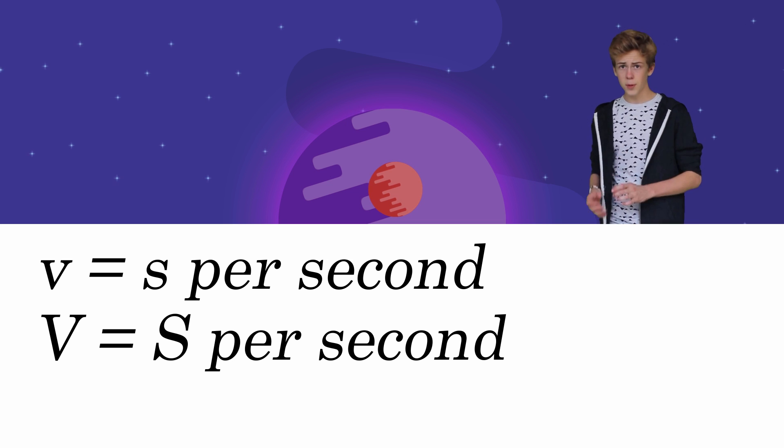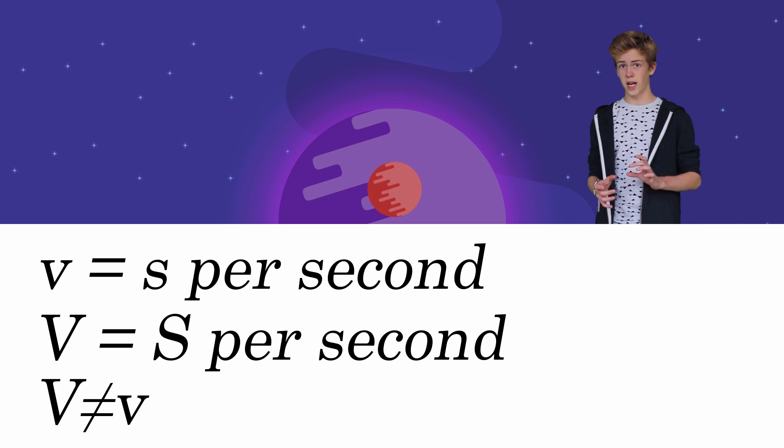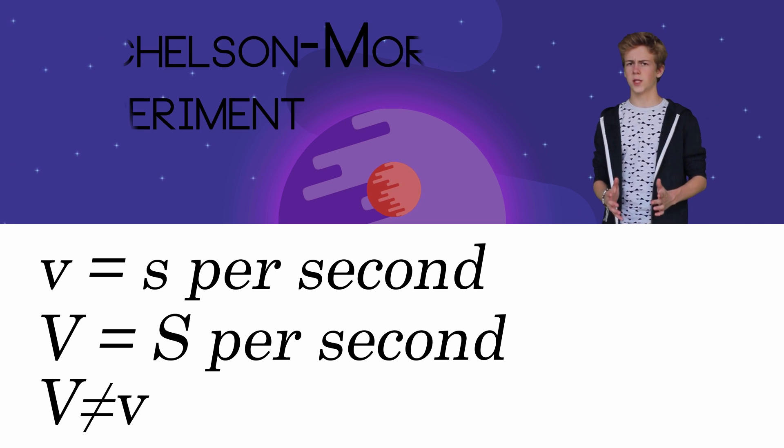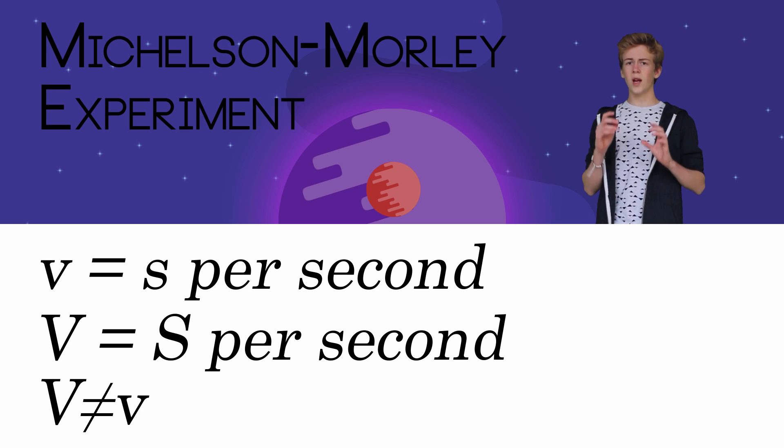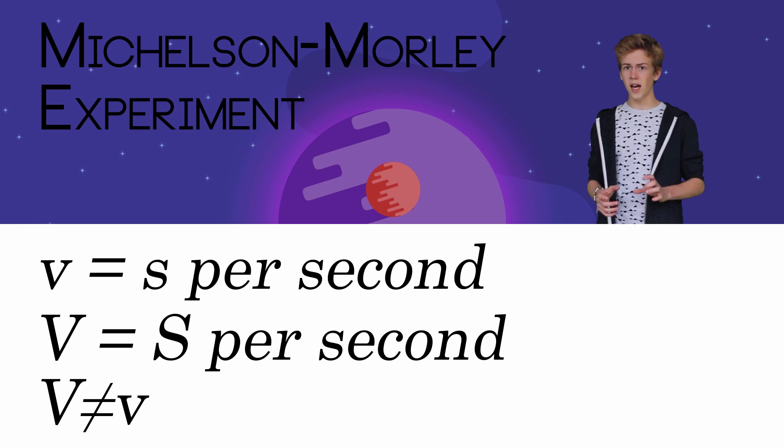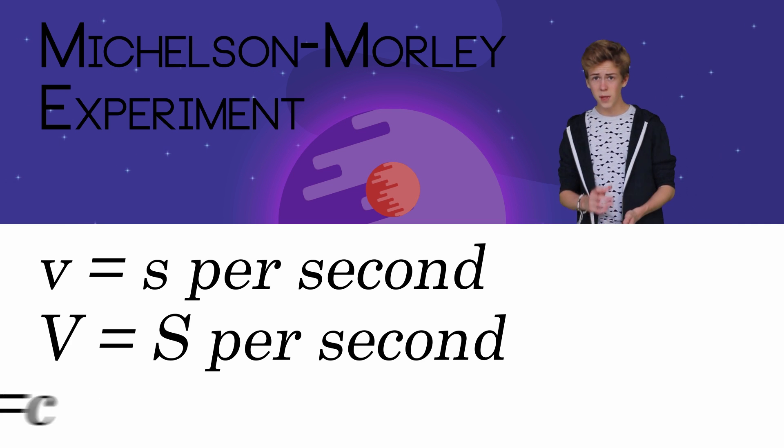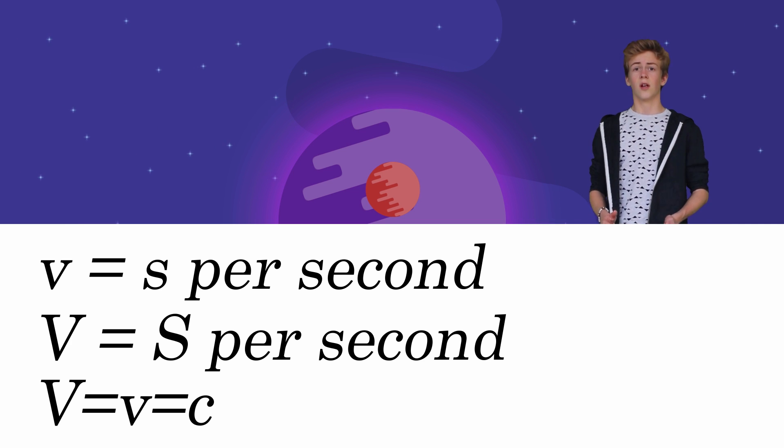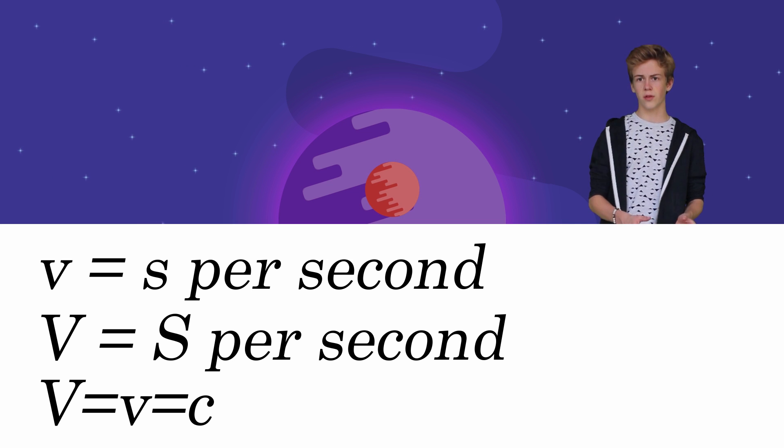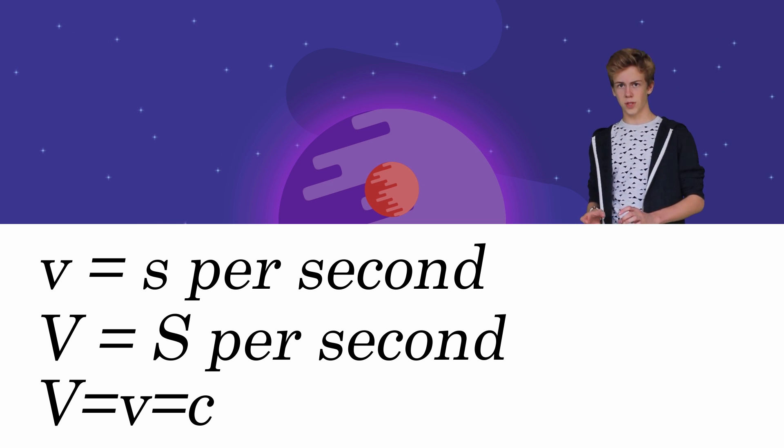That means that V and capital V are not the same. But the Michelson-Morley experiment tried to detect relative motion through ether and came to the conclusion that the speed of light is constant. And since V and capital V are the speed of light, something else has to be changing.